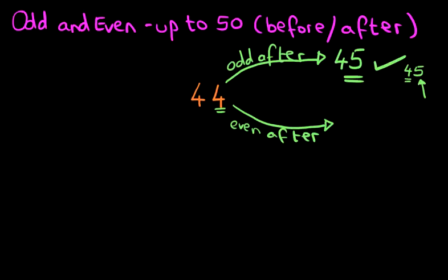So which is the number after 45? The number after 45 is 46. Again, we're not worried about the 4 — we're concentrating on the 6. Is 6 an odd number or an even number? The even numbers are 0, 2, 4, 6. So 6 is an even number. Therefore 46 is an even number. So the even number after 44 is 46.